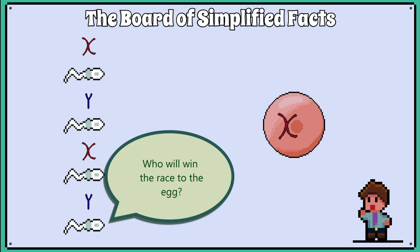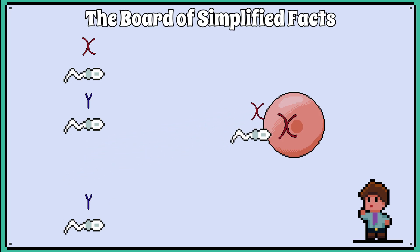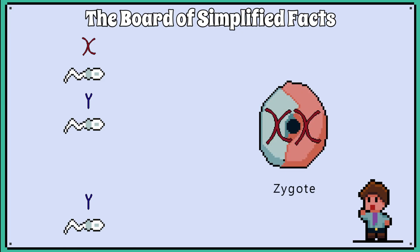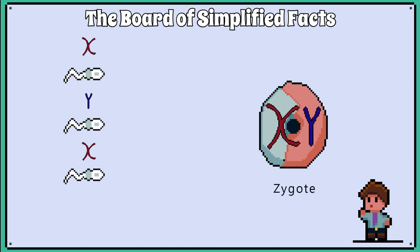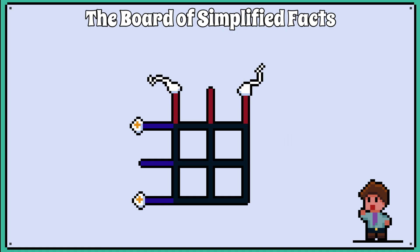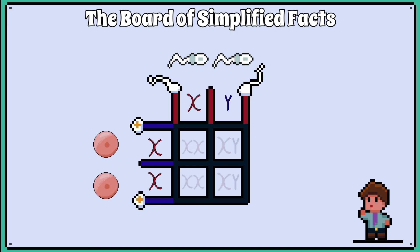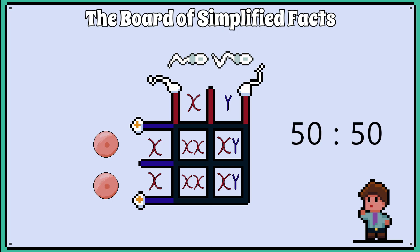During fertilisation, the random nature of gamete combination means that there is an equal chance that a sperm carrying either an X or Y chromosome will fuse with the egg cell. If the sperm carries an X chromosome, the resulting zygote will develop into a female with an XX genotype. If the sperm carries a Y chromosome, the zygote will develop into a male XY. We can represent this using a Punnett square: the columns represent the male gametes, X and Y, and the rows represent the female gametes, X and X. When we complete the Punnett square, it becomes clear that the phenotypic and genotypic ratio for offspring is 50:50, or simply 1:1, showing an equal likelihood of producing male and female offspring.